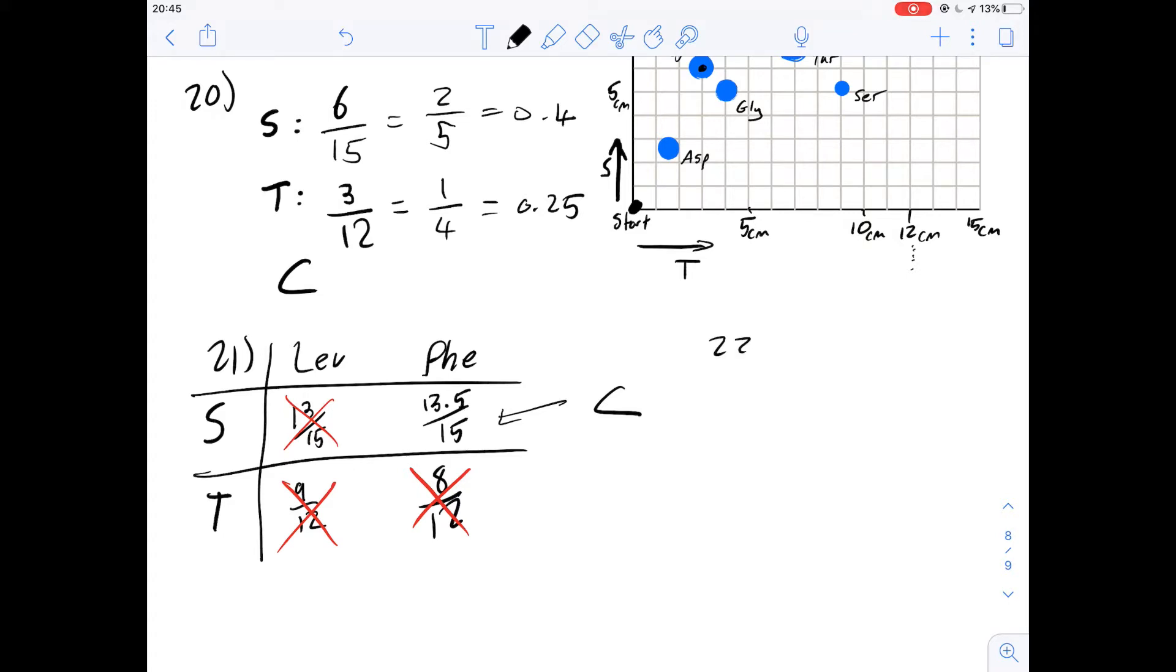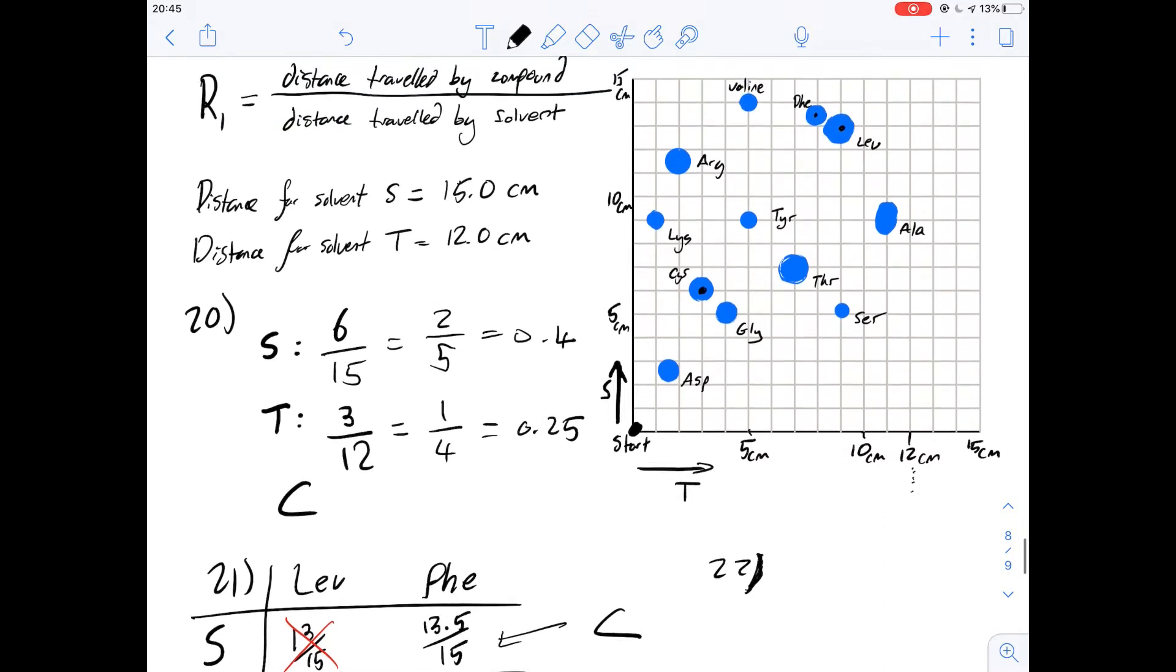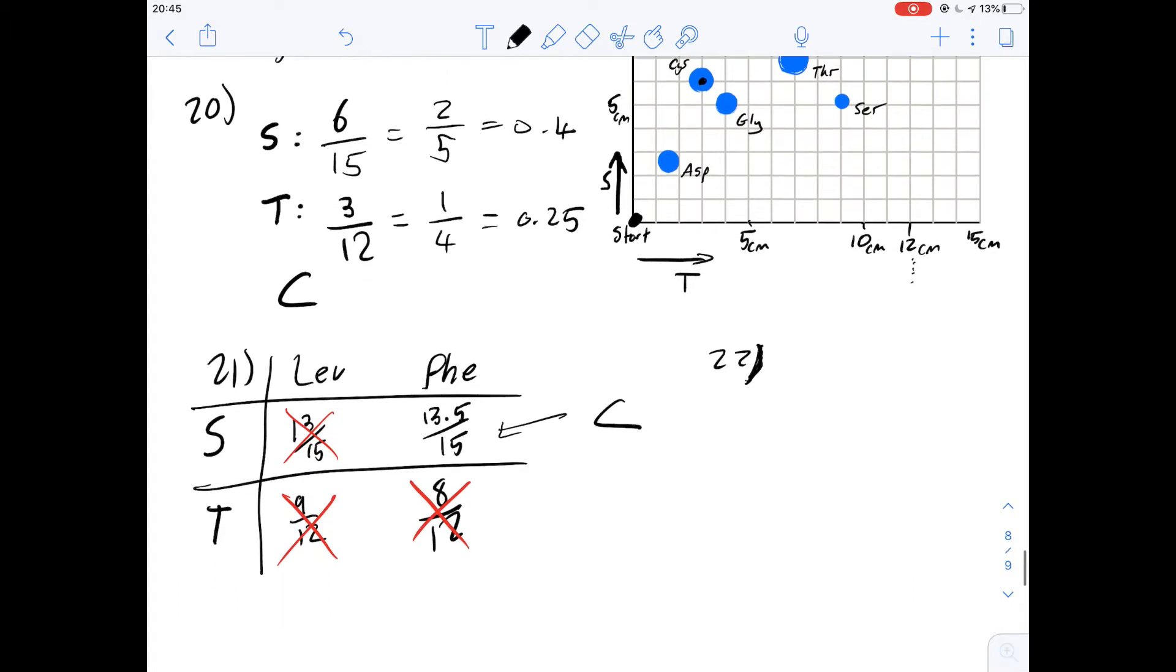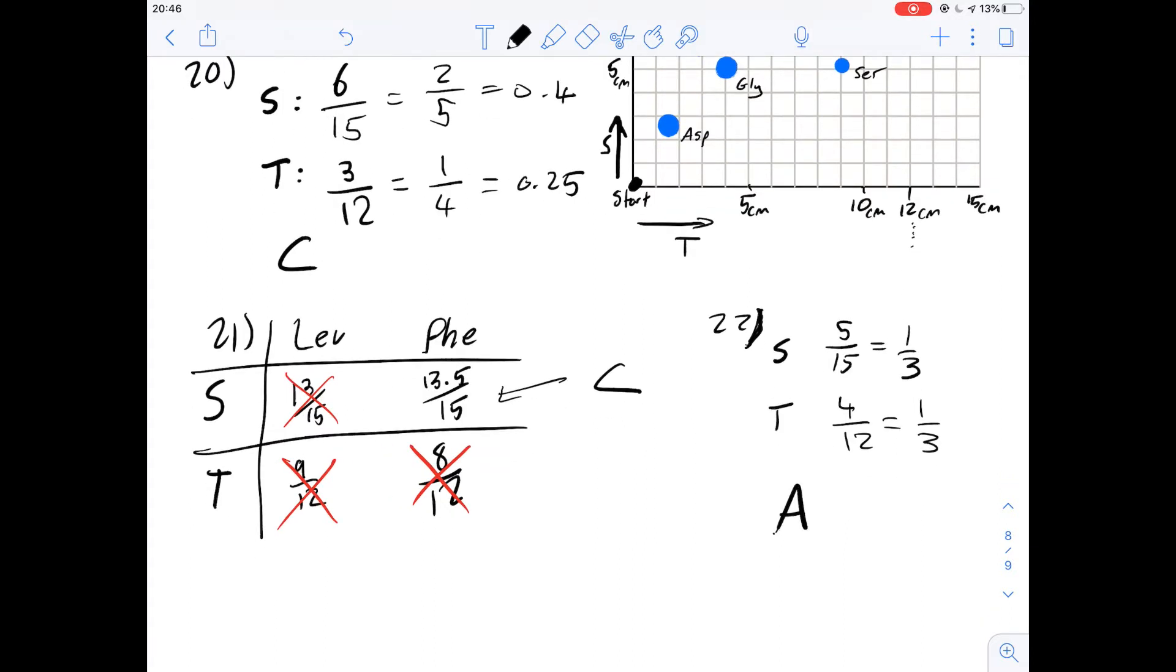If you look at question 22 then it says an amino acid in figure 1 has the same R1 value in both solvents S and T. Which one is it? So remember S and T travel two different distances so we're looking for the same R1 value for both. Looking at the first option glycine we can see that in S it went up 5 centimeters out of the 15 which is a third and in T it went across 4 centimeters out of the 12 which is going to be a third as well. So actually the first one we tried has the same R1 value for both solvents so the answer for this one is going to be A which is nice that saves us some time.